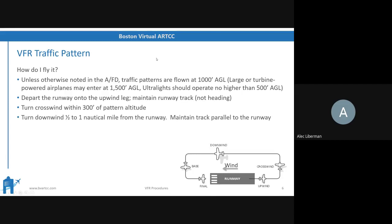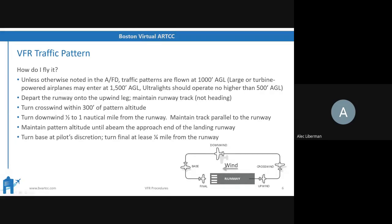You maintain pattern altitude — usually about 1,000 feet — until you are abeam the approach end of the landing runway. A good way to figure out when to start descending is when your wing is opposite or abeam the point you want to land, such as the 1,000-foot markers. At your discretion you turn base. If you're flying left downwind, look 45 degrees behind the wing — when the runway threshold is there, that's when you start your base turn. Maintain 200 knots or less in the pattern.